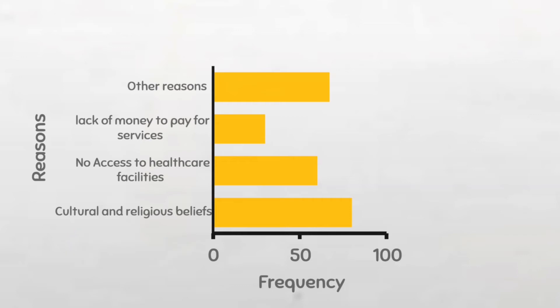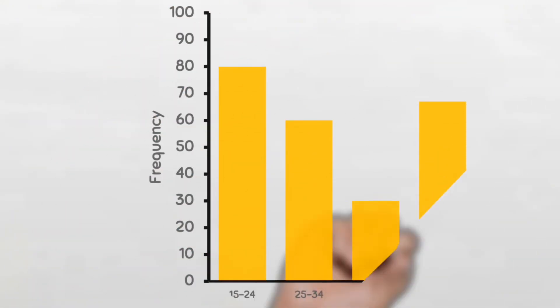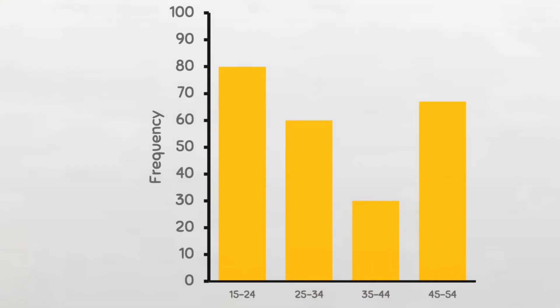On the other hand, if your data is ordinal — meaning the categories have a natural order — a vertical bar chart is a better choice, because placing the bars vertically from left to right in that order is more logical. For example, the age group of women attending antenatal care will be better put in a vertical bar graph like this.